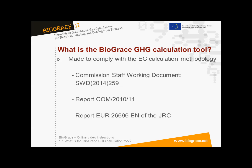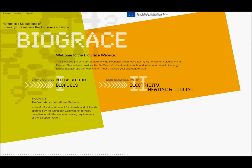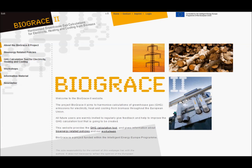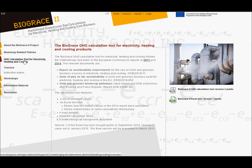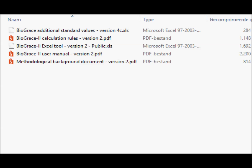If you download the tool from the Biograze website, you'll receive it as a zip file. First, go to www.biograze.net. Here, you can choose between Biograze 1 and Biograze 2. Click Biograze 2 and go straight to the greenhouse gas calculation tool. After clicking here, you download the tool as a zip file.